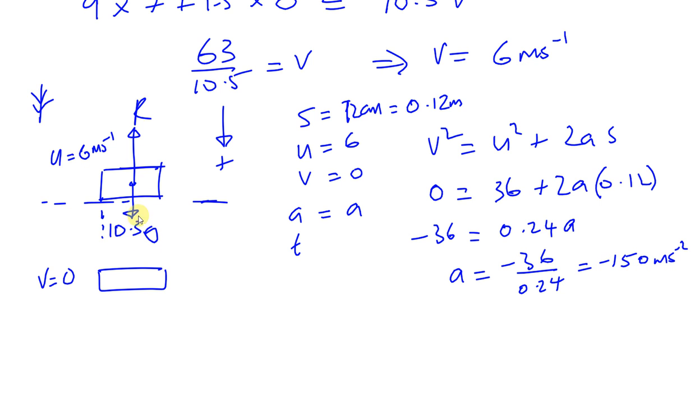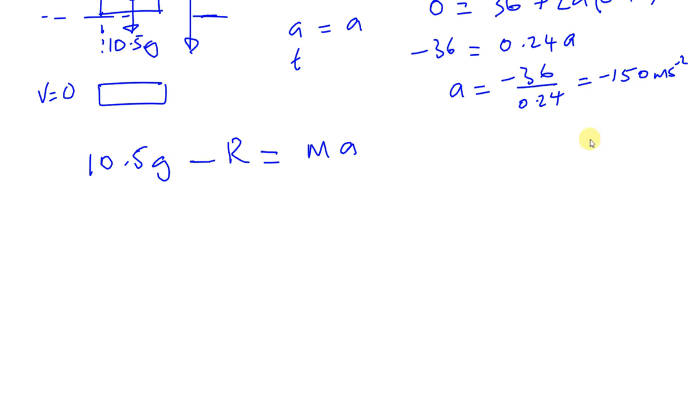Now we can use that now to find R. Because if you look at the forces acting upon the particle, it's going down. So you've got 10.5 G, that's acting down, acting up in the opposite direction is R, and that's equal to MA. Okay? And M is 10.5, and A is minus 150. So you have 10.5 times 9.8 minus R equals 10.5 times the acceleration which is minus 150. So we can find what R is.